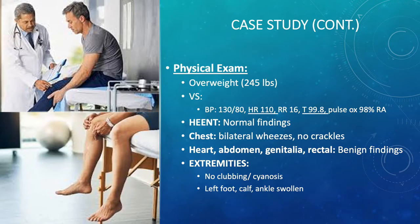For the physical exam of JB, we note that he is overweight with a weight of 245 pounds. His vital signs were largely benign, but he had a heart rate of 110 and a temperature of 99.8.